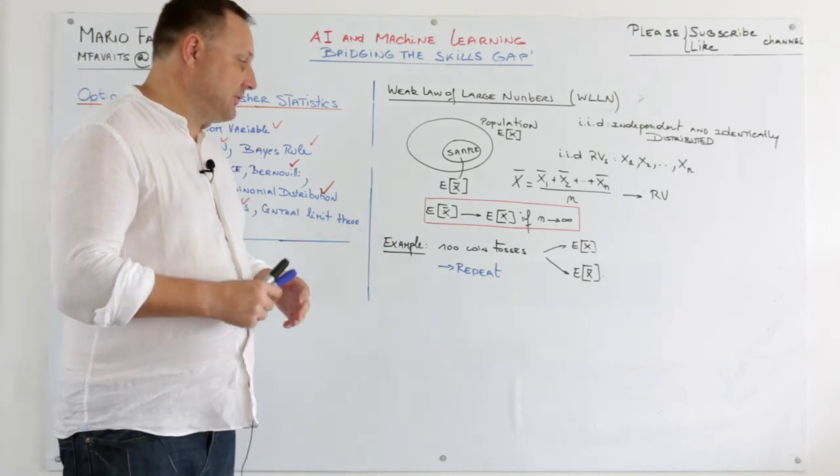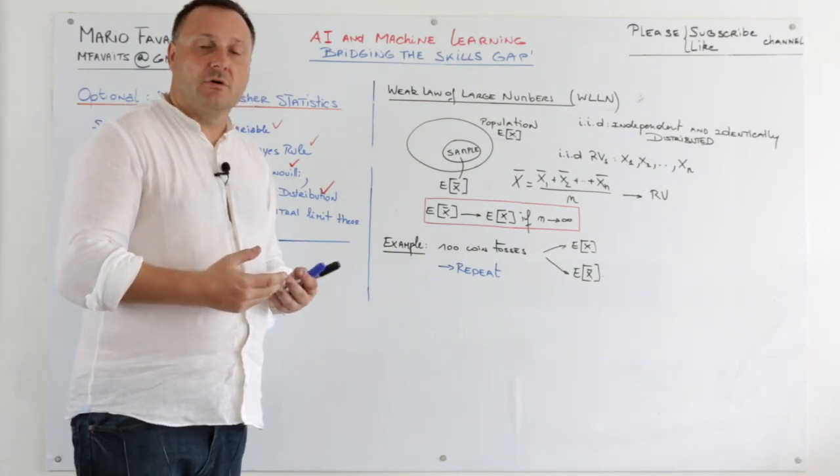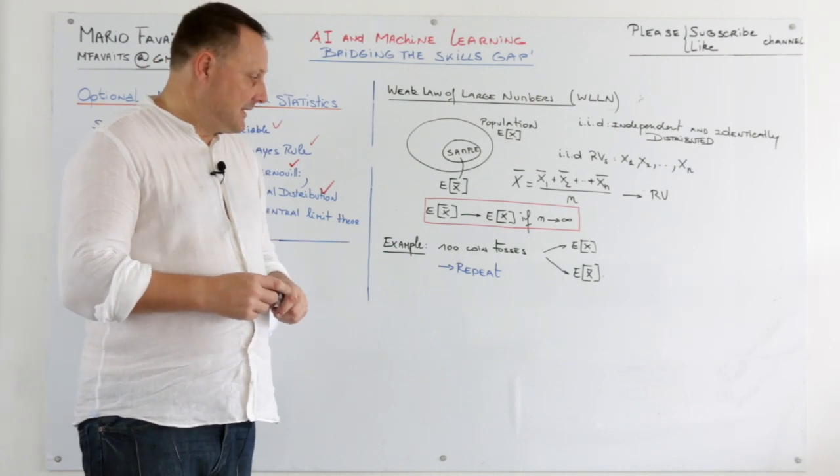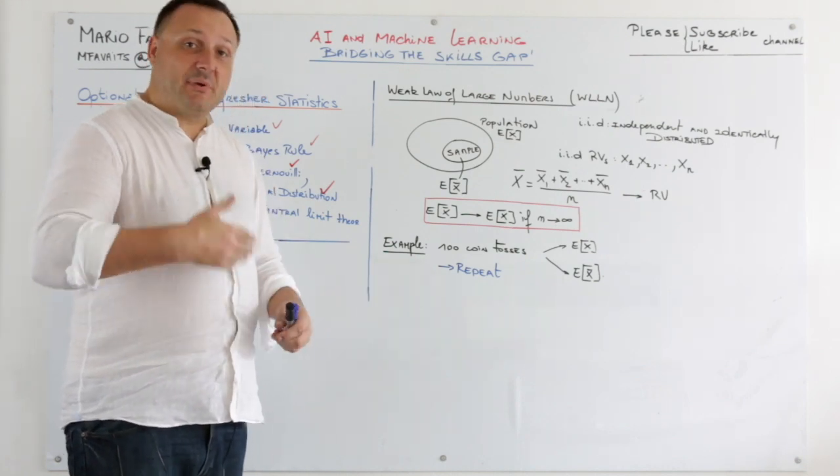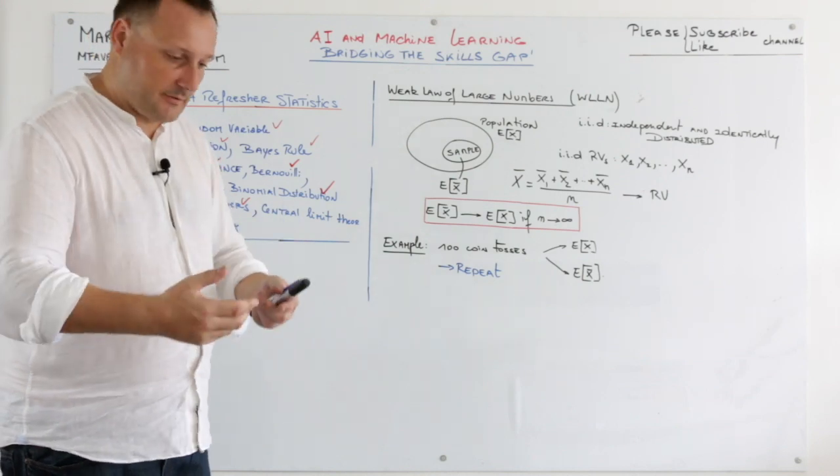So let's look at an example where an experiment is to do 100 coin tosses. And we will repeat that experiment. So 100 coin tosses, another 100 coin tosses and so on.